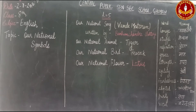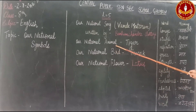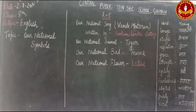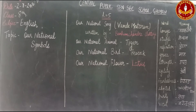Our national animal — our national animal is the Tiger. This animal is a symbol of grace, strength, agility, and fearlessness. So our national animal the tiger is a symbol of these four qualities.